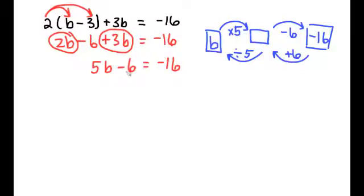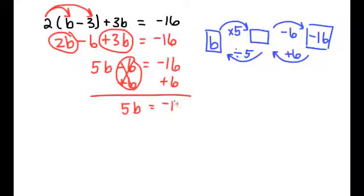So let's finish this off here. According to our work on the right, we need to add 6 on both sides. Notice that once again our negative 6 and positive 6 are opposites. They cancel out, leaving us with 5b equals negative 10.